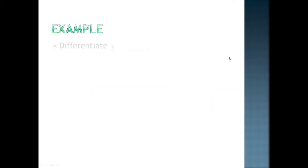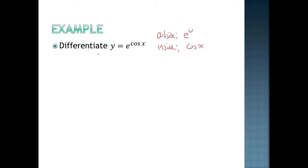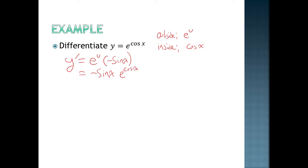This next one is a trig example in combination with an exponential example. My outside function is e to the u, and my inside function is cosine(x). So y prime is the derivative of the outside function — thankfully, the derivative of e to the u is just e to the u — times the derivative of cosine(x), which is negative sine(x). So we get negative sine(x) times e to the u, and u is really just cosine(x), giving us negative sin(x)·e^(cos x). Here we're combining chain rule with trig derivatives and exponential derivatives.